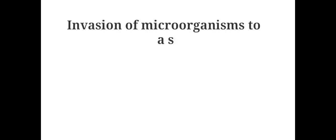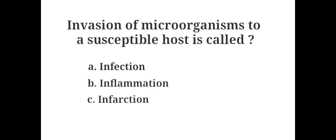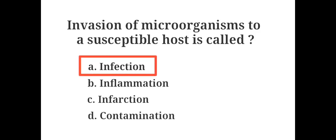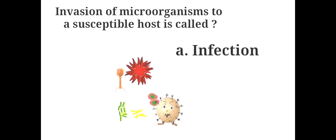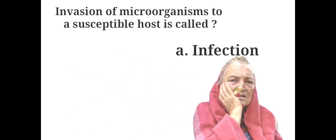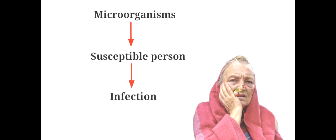Invasion of microorganisms to a susceptible host is called: A. Infection, B. Inflammation, C. Infarction, D. Contamination. The answer is A. Infection. Infection is developed when microorganisms attack a vulnerable person who is probably immunosuppressed.